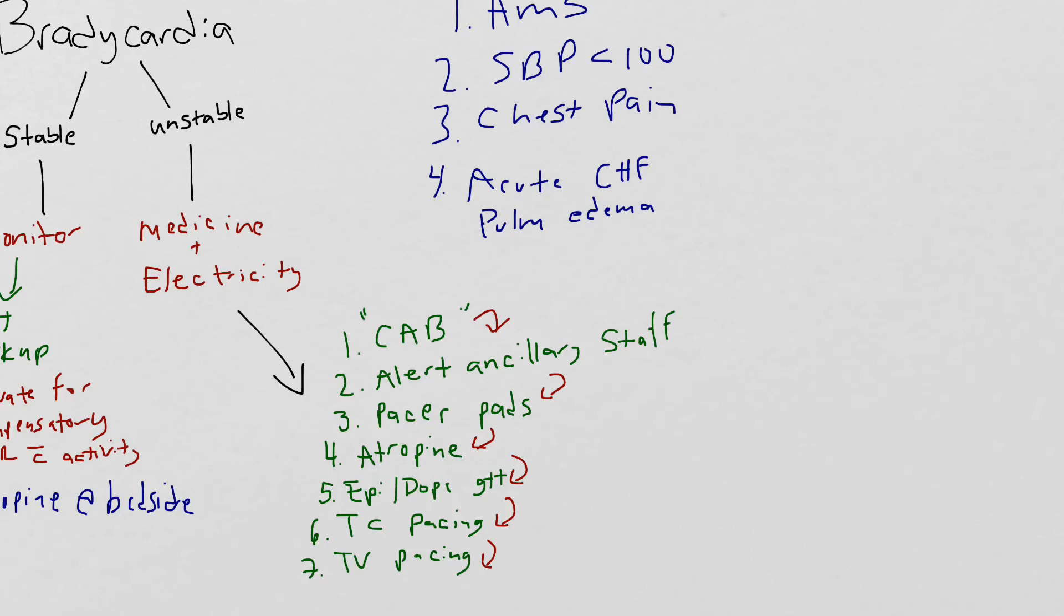If he's otherwise mentating with a soft blood pressure in the high 90s systolic, then maybe you have a little bit more time than the patient with acute pulmonary edema, altered mental status, who you may need to intubate, and you see their pressures are dropping very rapidly. That person you may just jump quickly to pacing and then try to start some medicines.